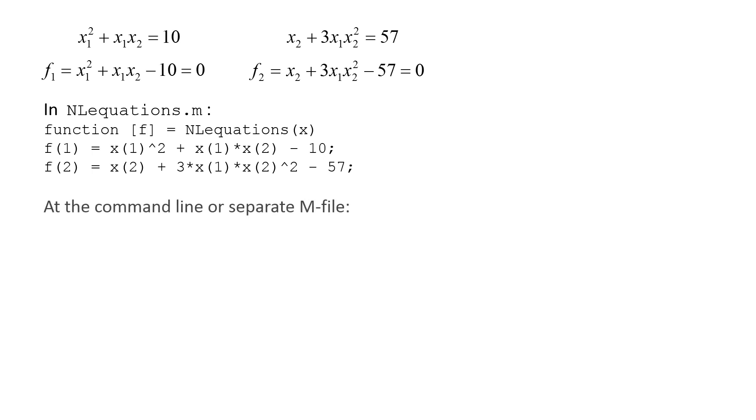We can invoke fsolve at the command line or in a separate m-file. First, we set initial guesses for x1 and x2. We create a vector containing two arbitrary values, 0 and 0, and assign the vector to x0.